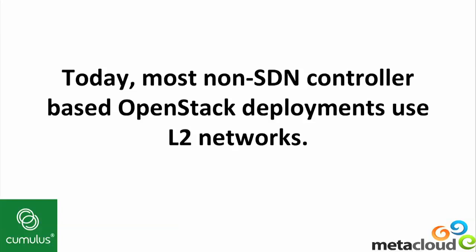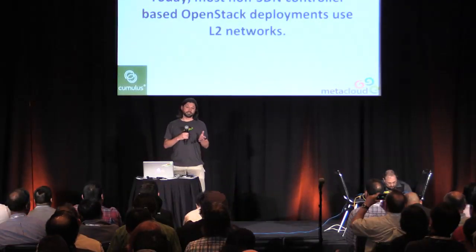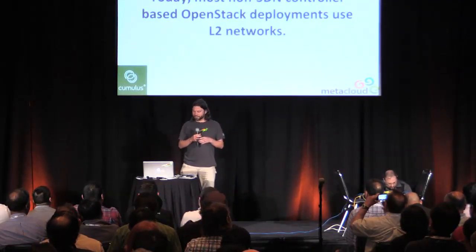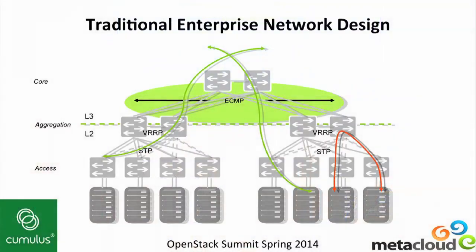As many in the audience are aware today, most OpenStack deployments that don't have some sort of SDN controller are largely based on L2 networks, and multi-tenant tenancy is provided by VLANs. Here we have a slide graphically representing it. As you can see, there's the big pair of core switches up at the top, and then there are pairs of aggregation switches down below.